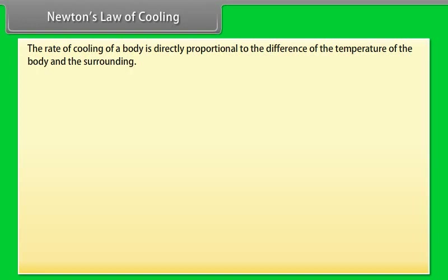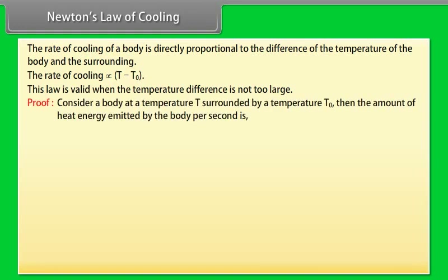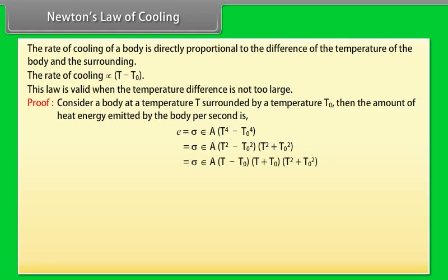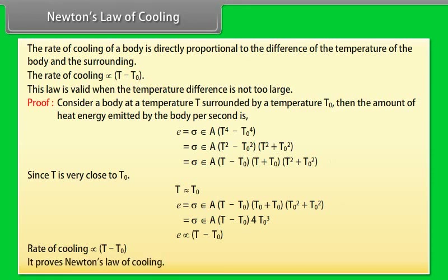Newton's Law of Cooling states that the rate of cooling of a body is directly proportional to the difference between the temperature of the body and the surroundings (T − T0). This law is valid when the temperature difference is not too large. Proof: For a body at temperature T surrounded by temperature T0, the heat emitted per second is E = σεA(T − T0)(T + T0)(T² + T0²). Since T is very close to T0, E ∝ (T − T0), which proves Newton's Law of Cooling.